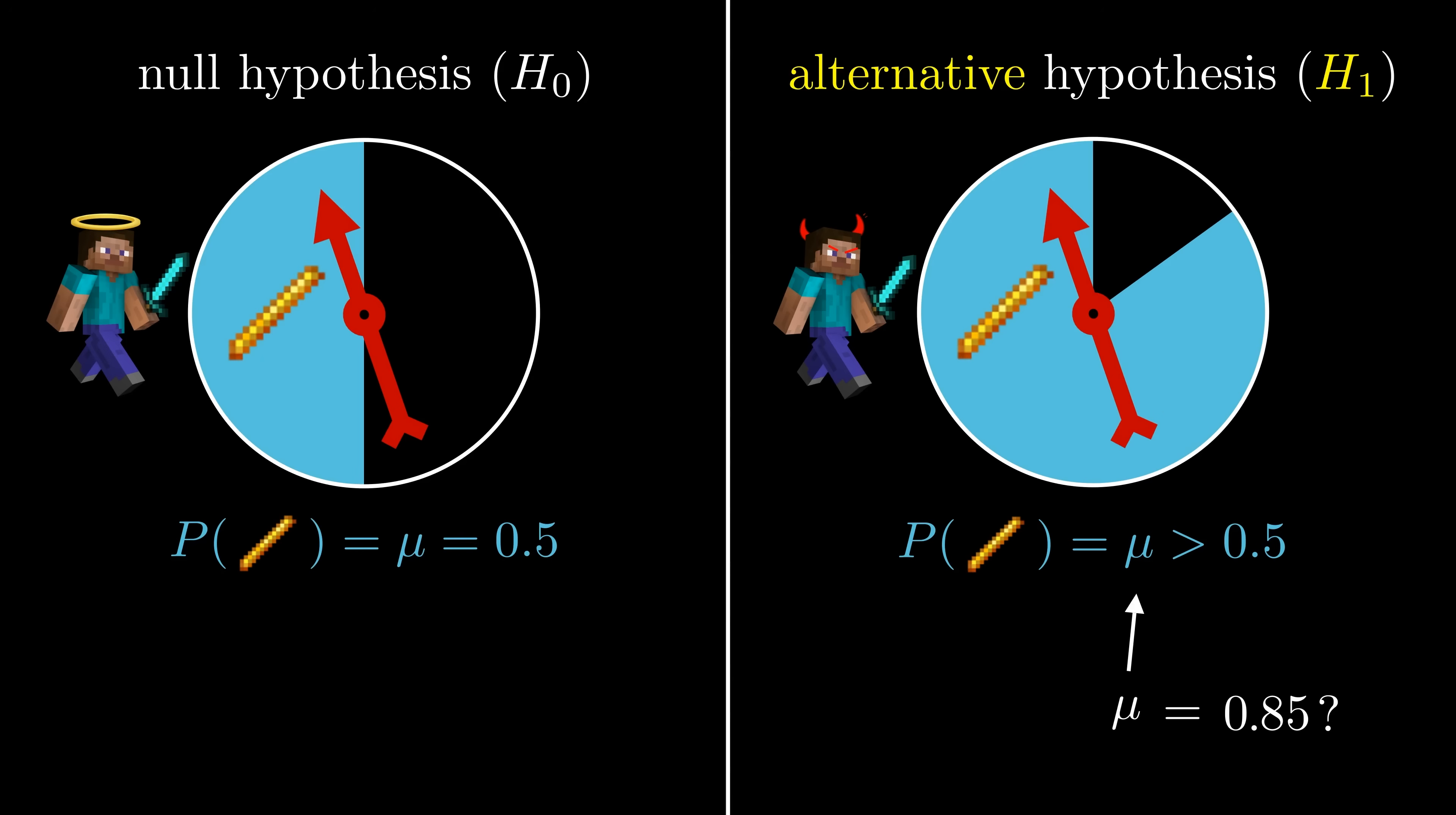Without knowing mu, we aren't even sure what the model is, so it's going to be very hard to calculate probabilities in this world.